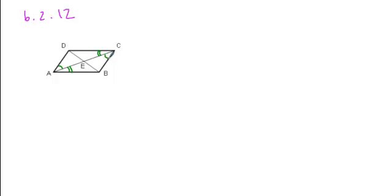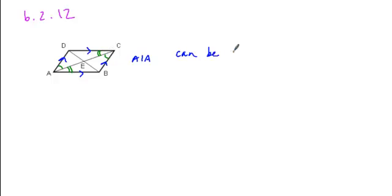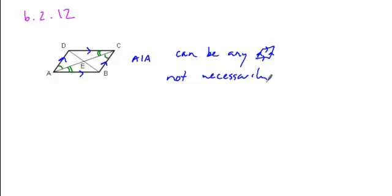All you're told by these is you have alternate interior angles that are equal, so lines are parallel here and here. It says nothing about the length of the sides, so this can be any parallelogram. Therefore it's not necessarily a rhombus, so this statement is false.